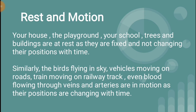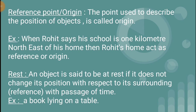Every time we have to describe whether an object is at rest or in motion, we have to take some reference point. When you say you are at rest, it is because you are not changing your position with respect to the walls of the room or your study table; but with respect to outer space, you are in motion. The point used to describe the position of an object is called the origin or reference point. For example, when Rohit says his school is one kilometer north-east of his home, then Rohit's home acts as the reference or origin.